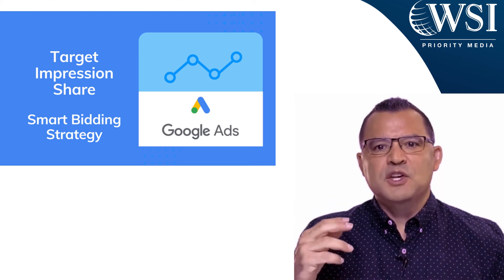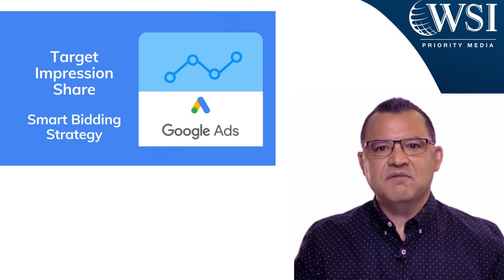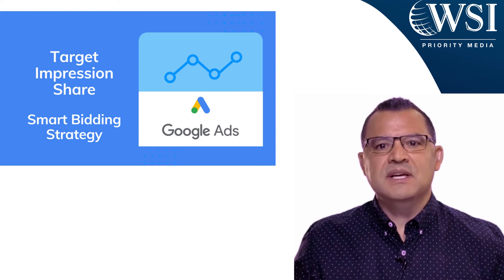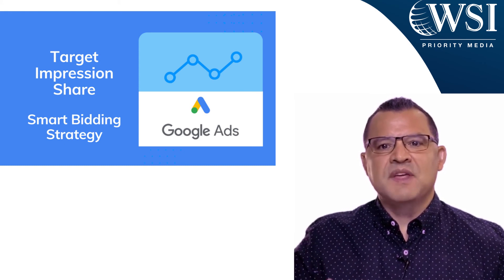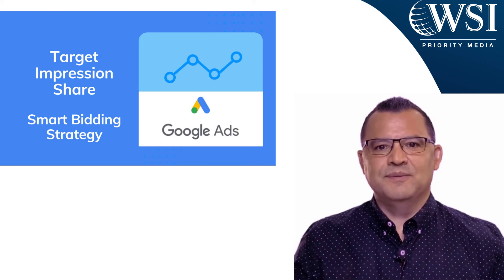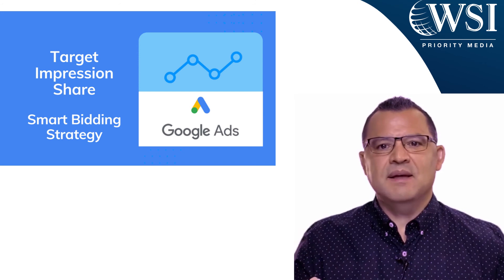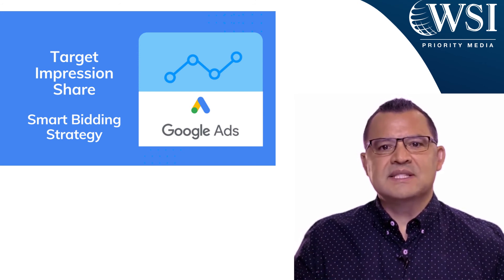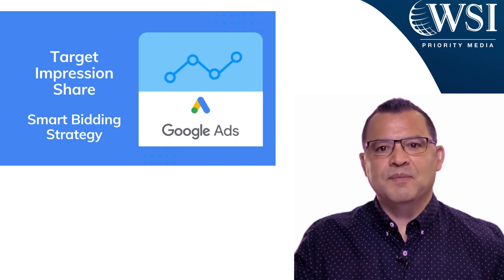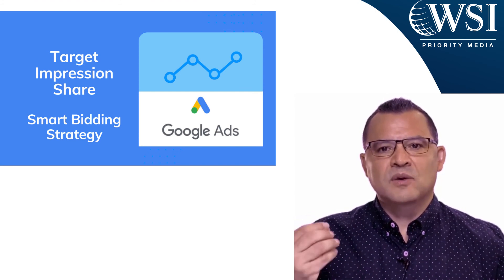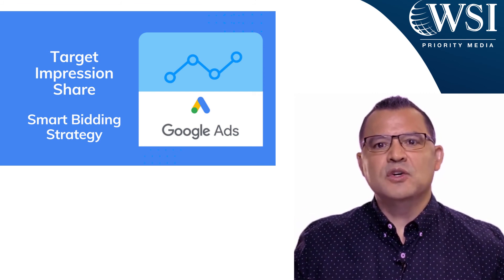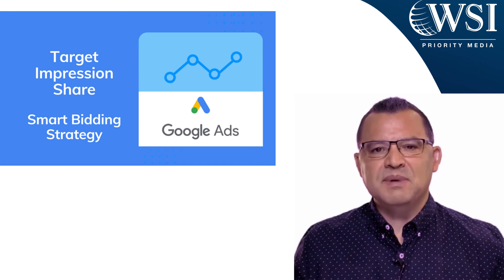If you want to try this for your campaign, I would suggest testing first before running a full campaign with this bidding strategy. The only way to know if this strategy will work well for you is to run a test campaign. From there you can decide if it's working and doing what it should. It's great when your target is to get as many impressions as possible. And that's my take on Google Ads Target Impression Share bidding strategy.